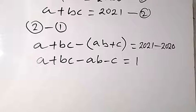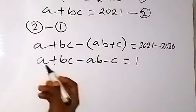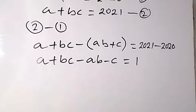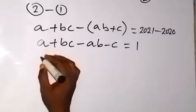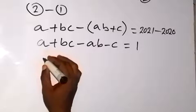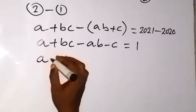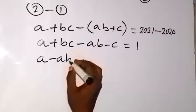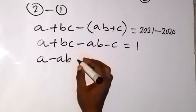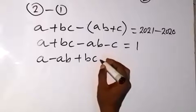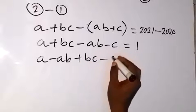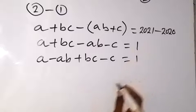Then from here let's try to group the like terms. So we have the like terms — the ones with A now. We have minus AB, bring it together. We have A minus AB. Then we have plus BC minus C equals to 1.